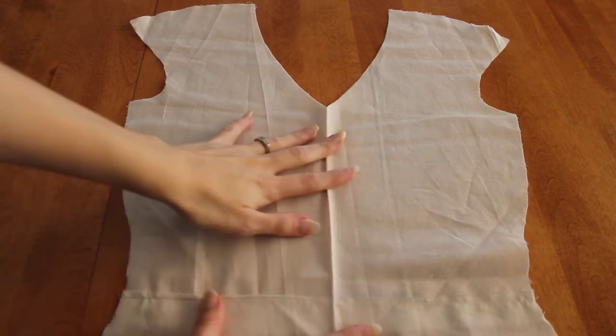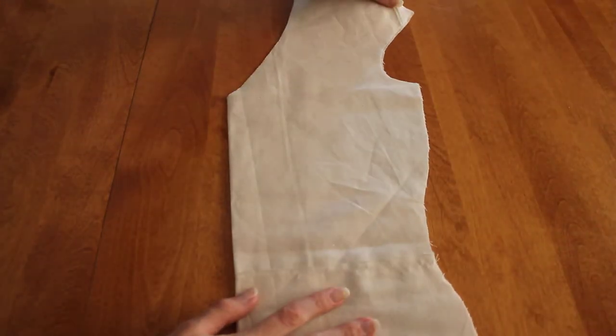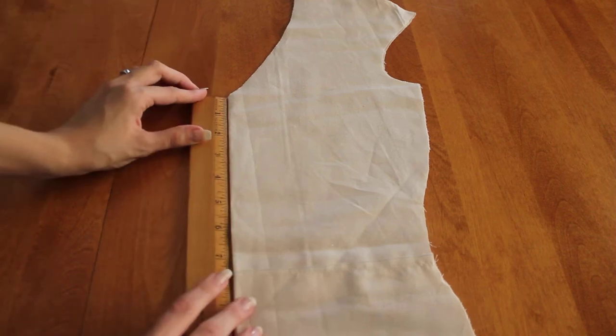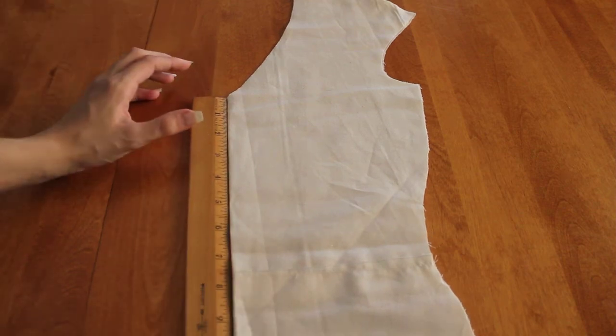What you're going to do is take the front piece of your pattern and fold it in half. And you're going to measure from this point here how long you want the breastplate to go down to that upside down V.